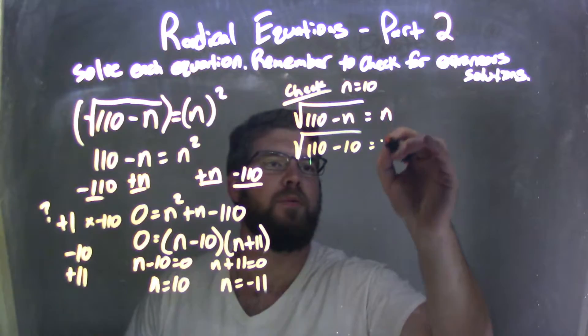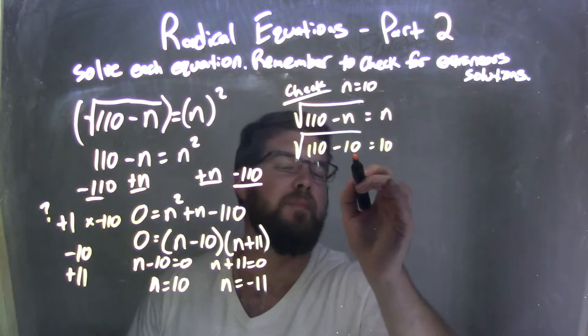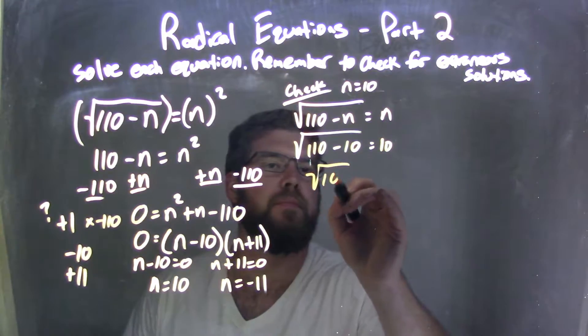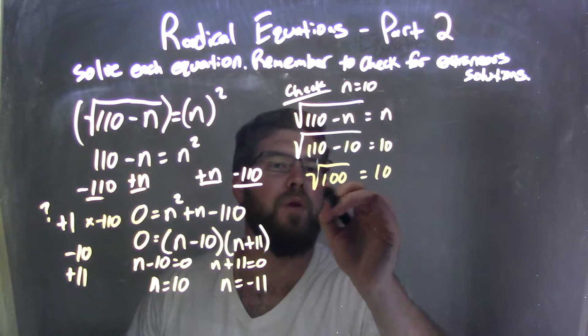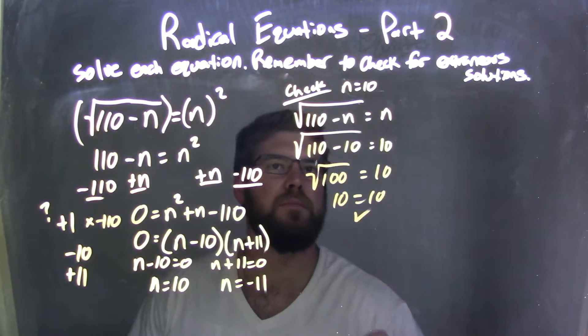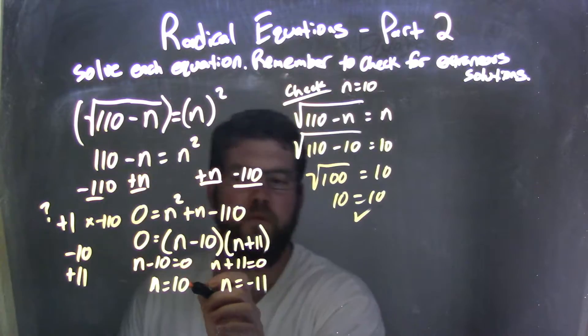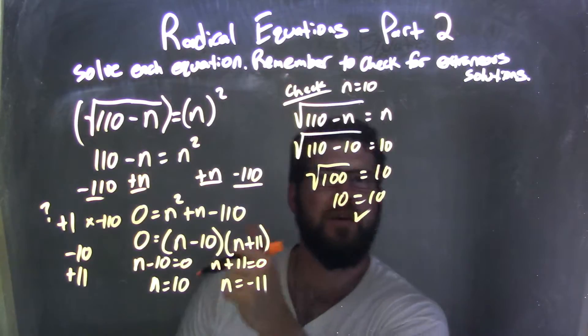Square root of 1/10 minus 10 equals 10, is that true? Well, 1/10 minus 10 is 100, and square root of 100 is 10, so we're good. That's our check here. So far we know that n equals 10 is a true statement, and we're good.